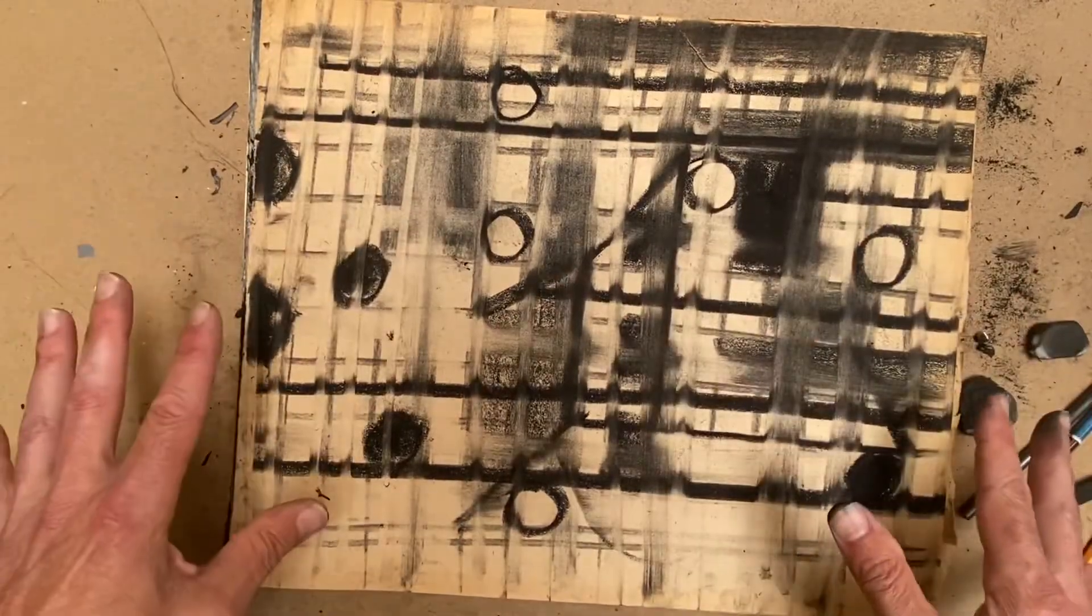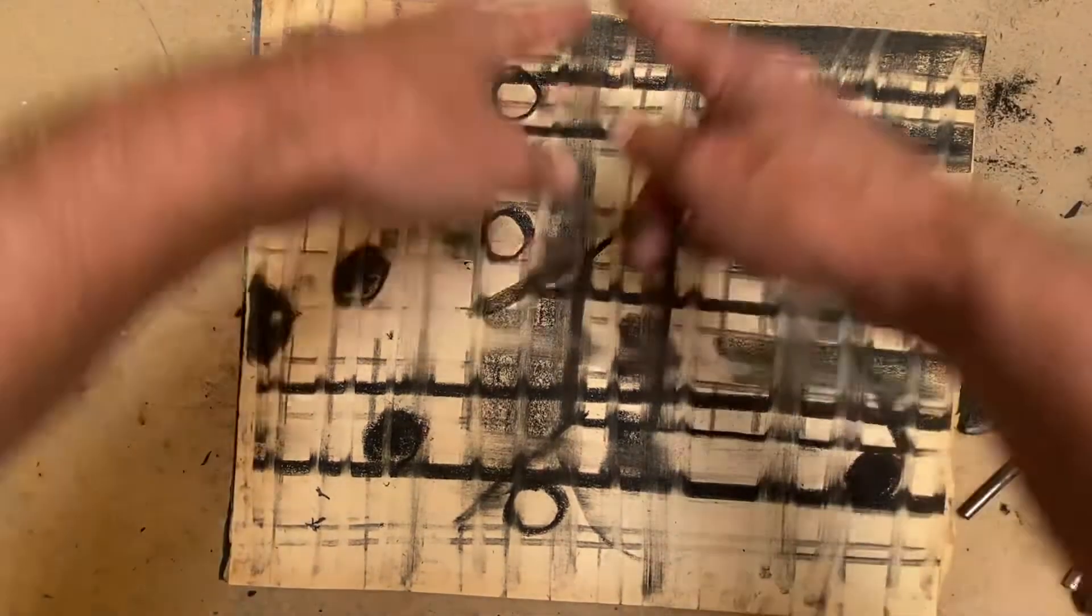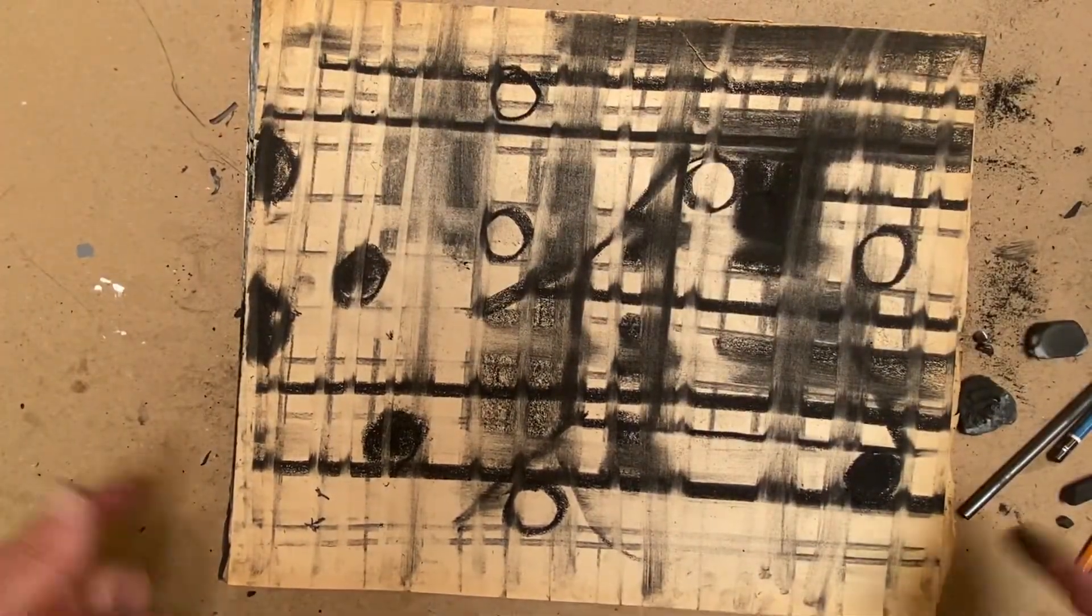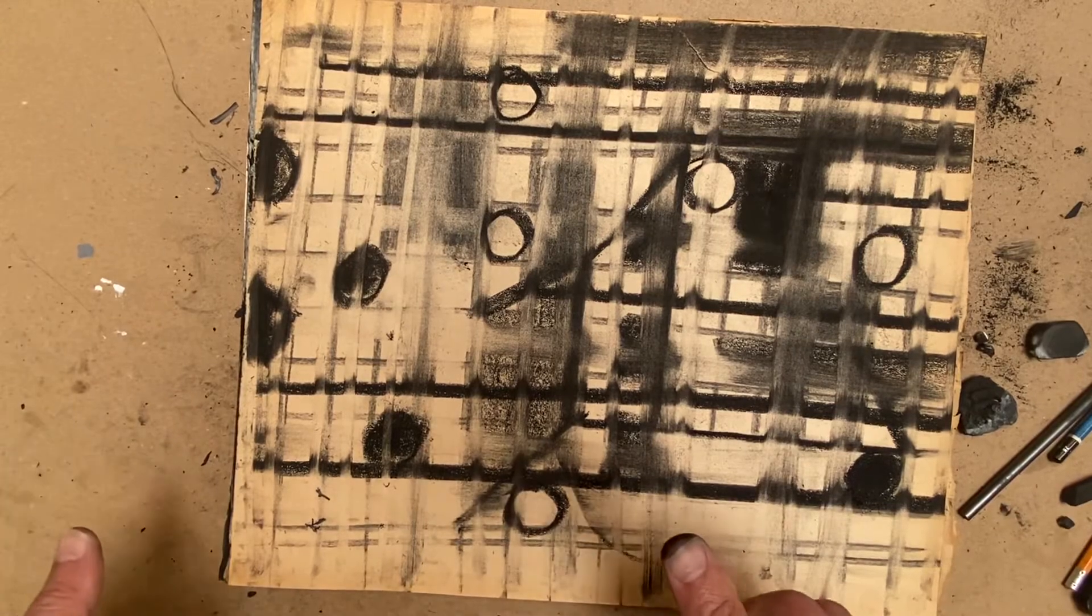And then it's going to become compositional because you're using the edges of the picture plane, like you did in the prior drawing before this one.